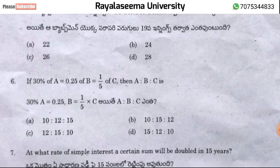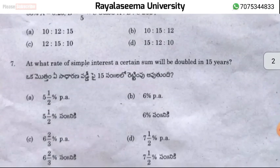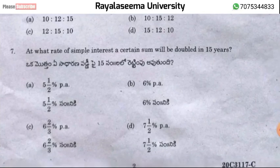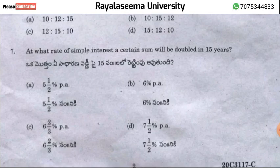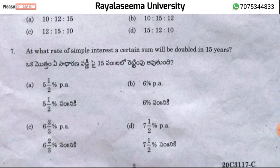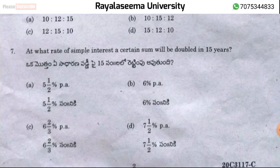For the simple interest question, when the principal amount doubles, the interest equals the principal. Using the formula I = PTR/100, if the amount doubles in 15 years, then T = 15 years and R = 100/15, giving the answer as 6⅔ percentage.